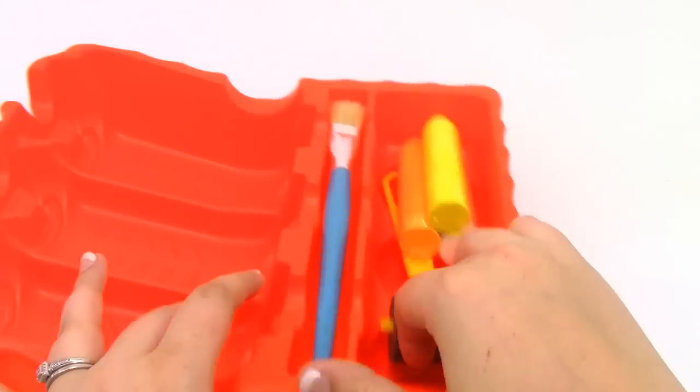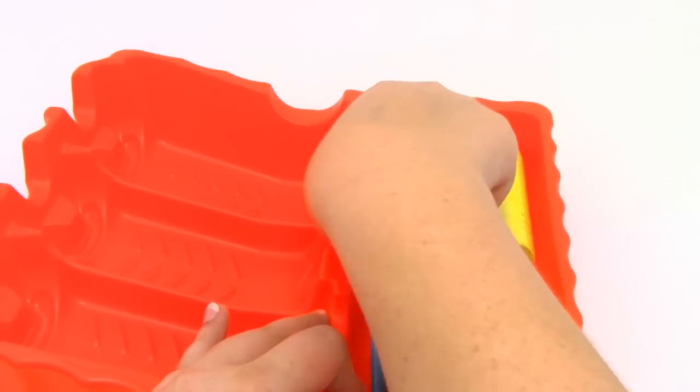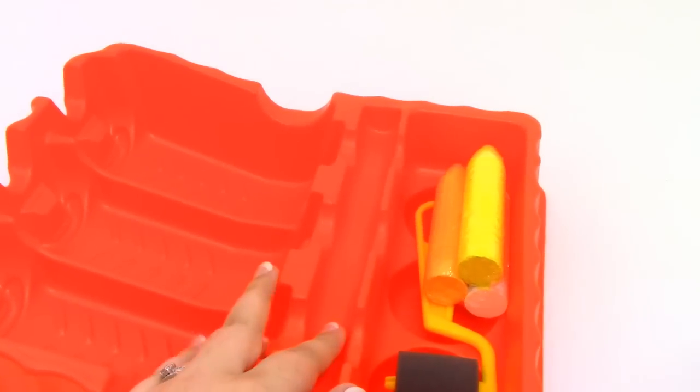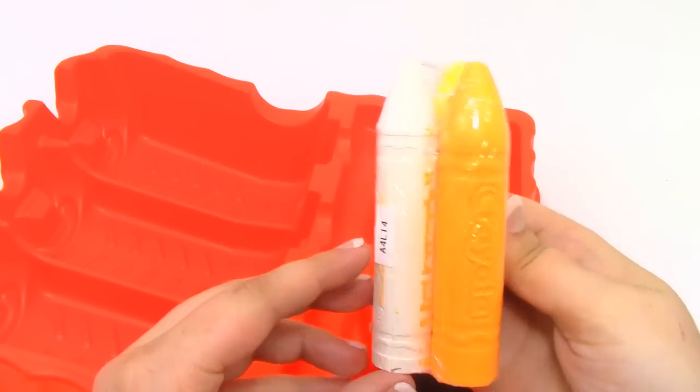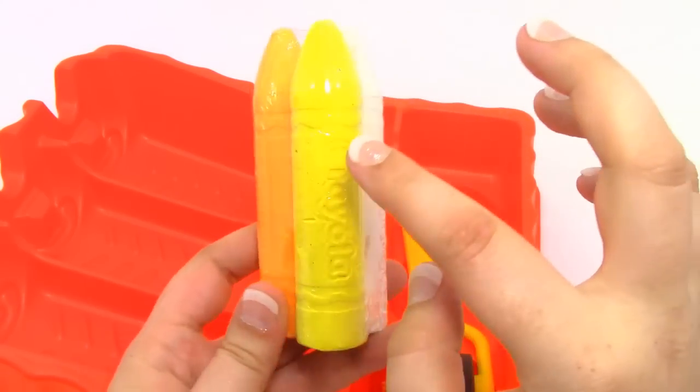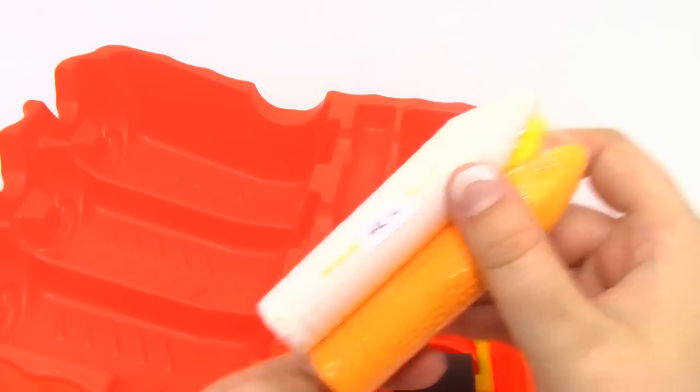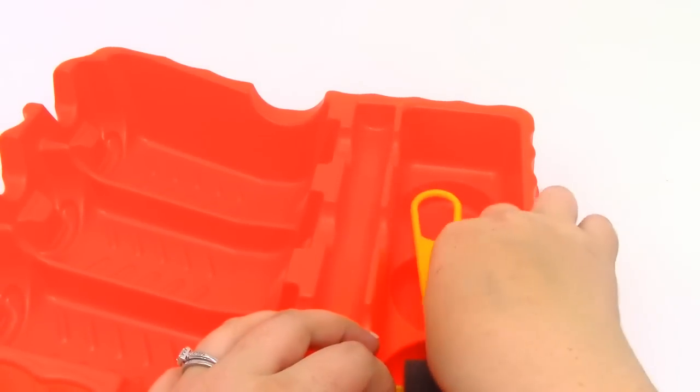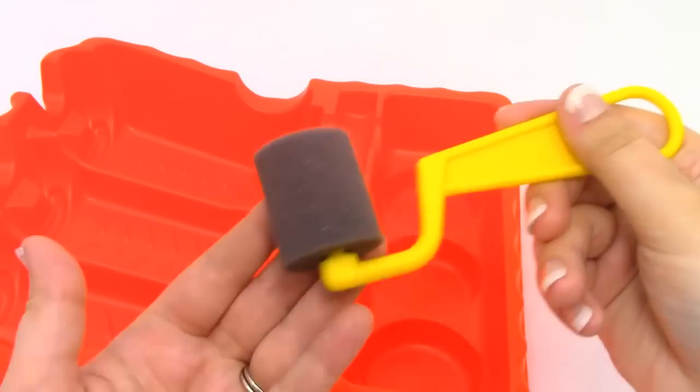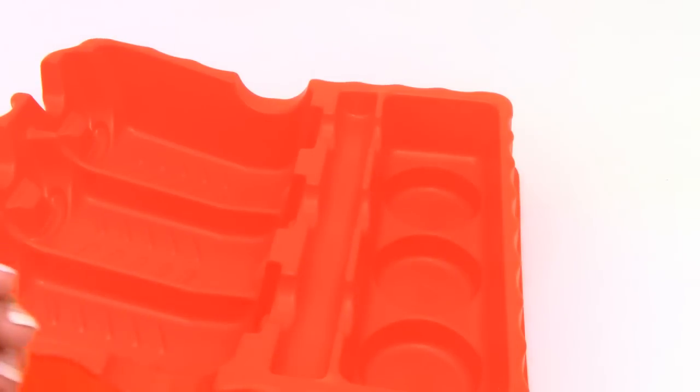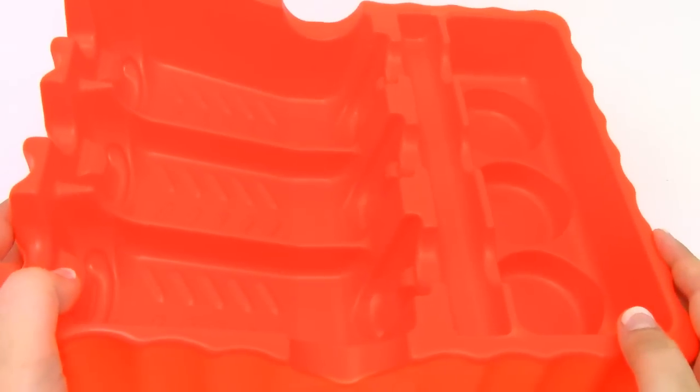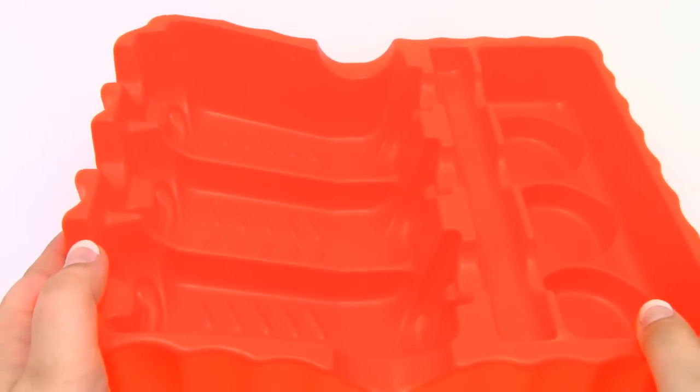Alright, if we turn it around, we have our giant paintbrush. We have three colors of chalk, orange, yellow, and white. And we also have this little rolling sponge. And of course, the entire kit comes in the tray.